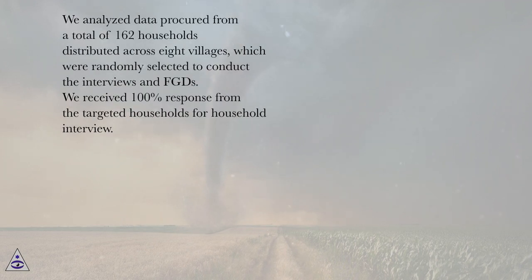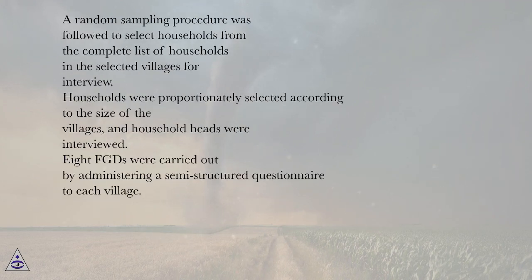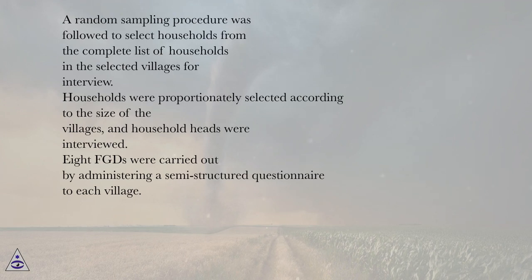We analyzed data procured from a total of 162 households distributed across eight villages, which were randomly selected to conduct the interviews and FGDs. We received 100% response from the targeted households for household interviews. A random sampling procedure was followed to select households from the complete list of households in the selected villages. Households were proportionately selected according to the size of the villages, and household heads were interviewed. Eight FGDs were carried out by administering a semi-structured questionnaire to each village.